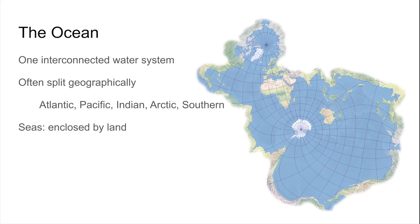You may have heard the term seas before, like the Mediterranean Sea or the Caribbean Sea. These are just bodies of water that are partially enclosed by land. For example, the Mediterranean Sea is bounded by southern Europe and North Africa.